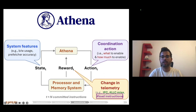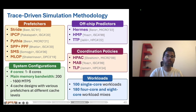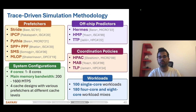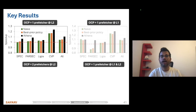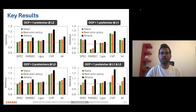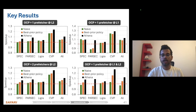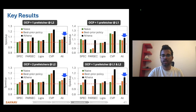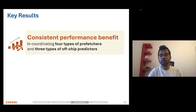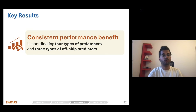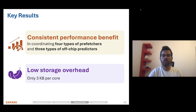We evaluate Athena coordinating a wide range of prefetchers and off-chip prediction mechanisms, comparing against multiple pair coordination policies across a wide range of workloads and system configurations. Our evaluation across system configurations differing in the number of prefetchers employed at different cache hierarchy levels shows that Athena consistently outperforms both the naive combination of prefetchers and off-chip predictor and the best pair coordination policy across all system configurations. Athena also provides consistent performance benefit across a wide range of prefetcher types and off-chip predictor types, all at a modest storage overhead.